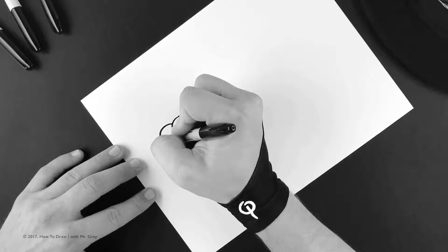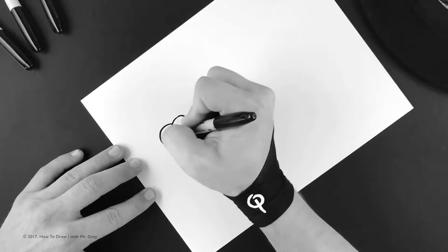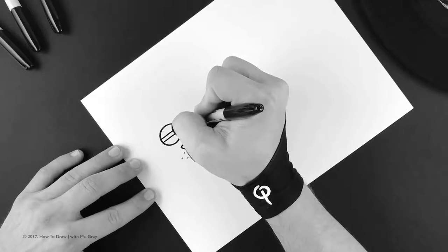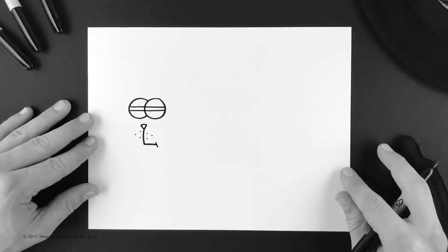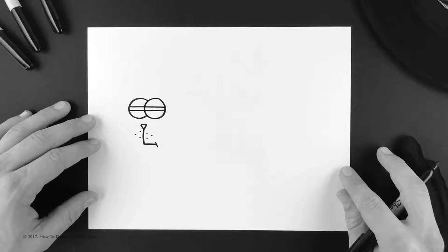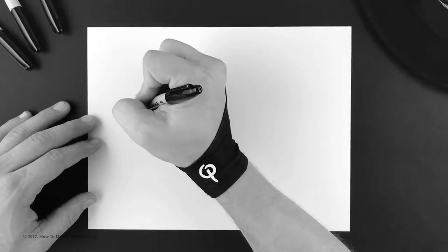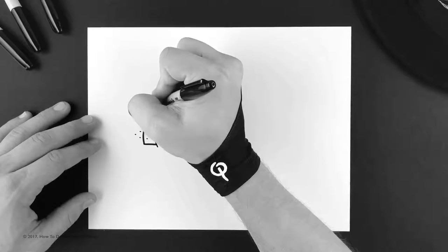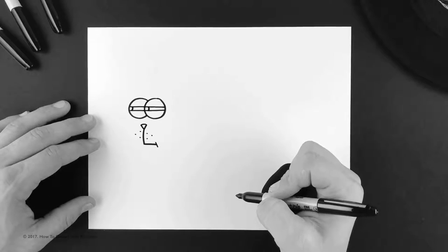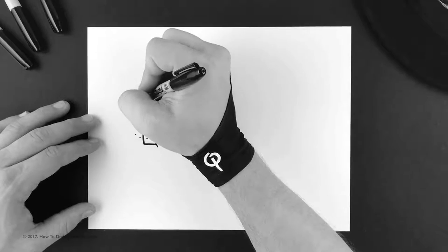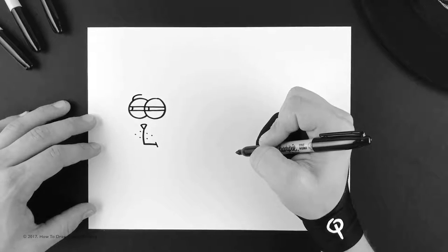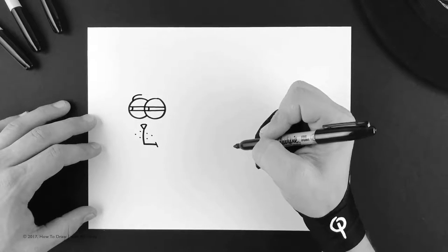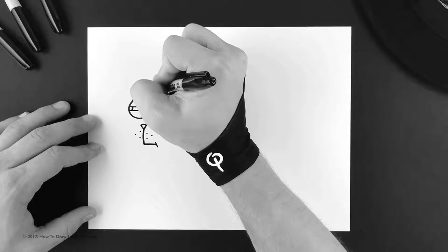So just do two parallel lines like that and have him looking off towards where he's going. Then coming off the top of his left eye, put in the little top part of his eye. And off that line we're gonna do a nice round hill like that.